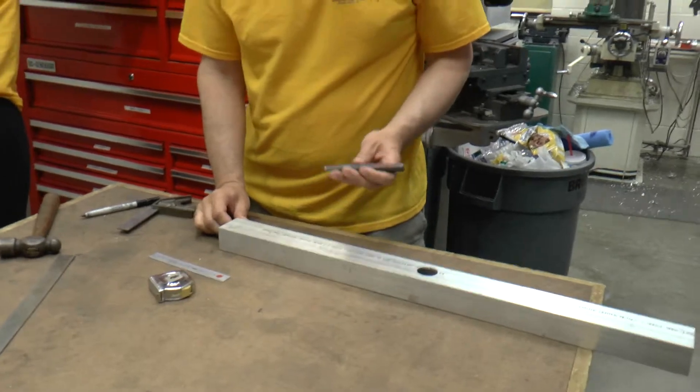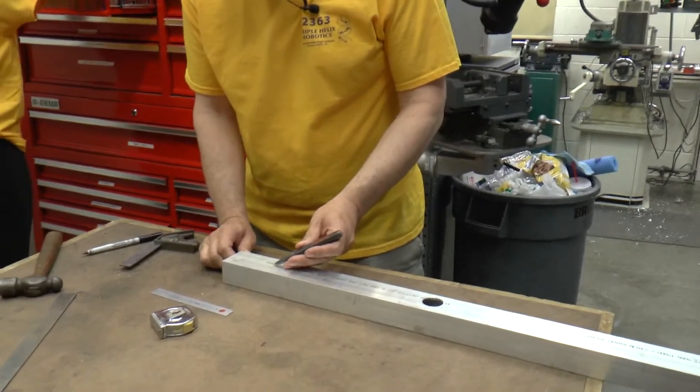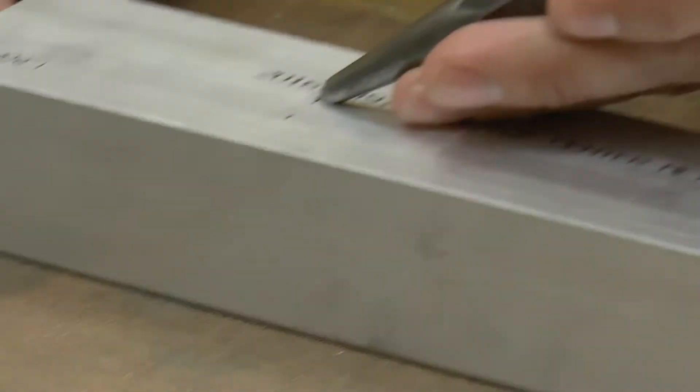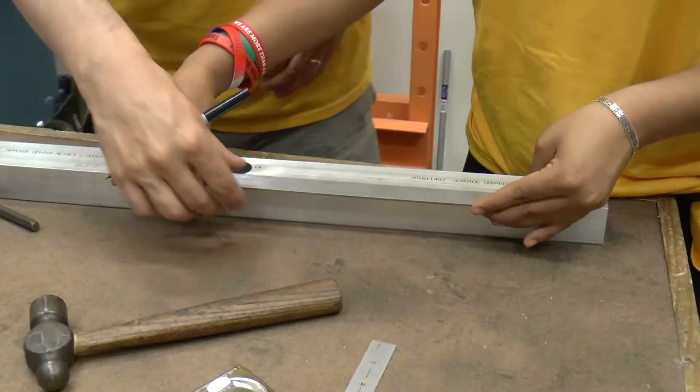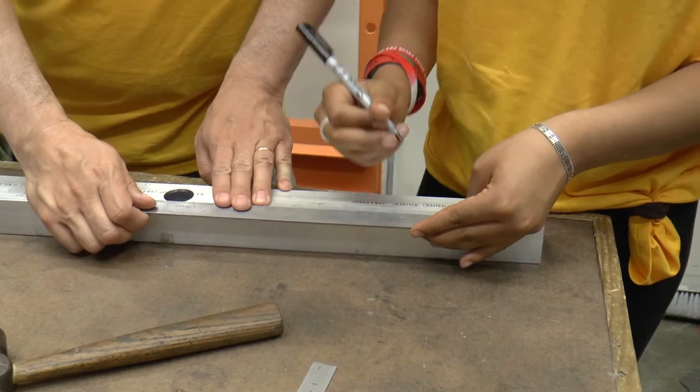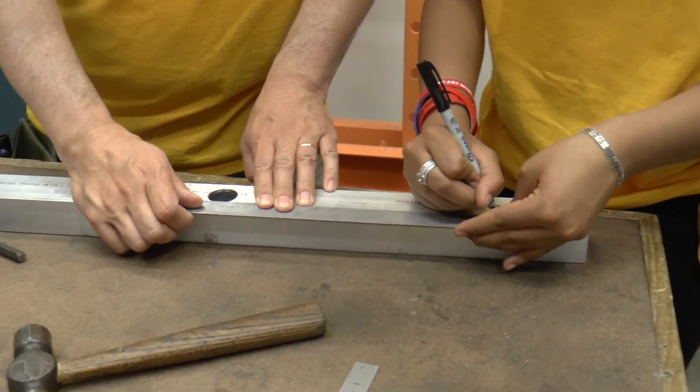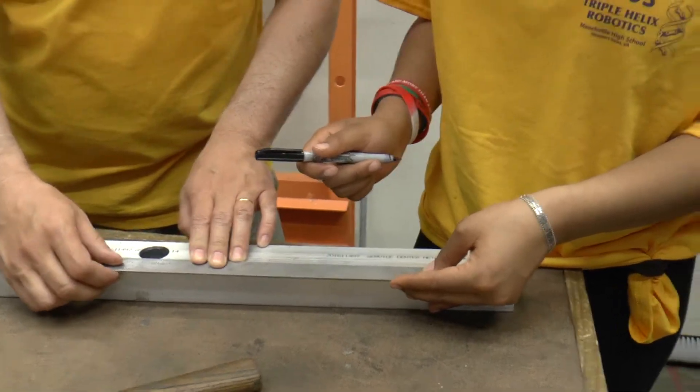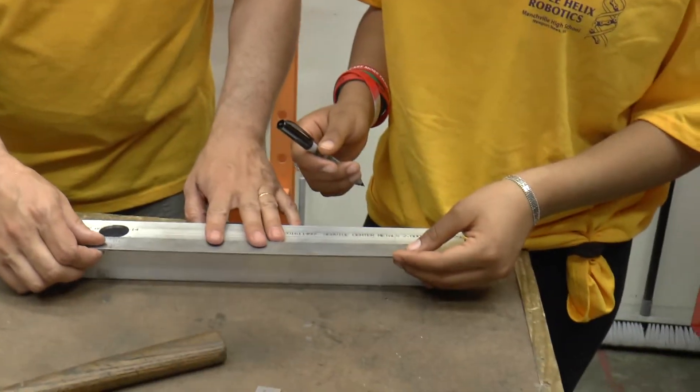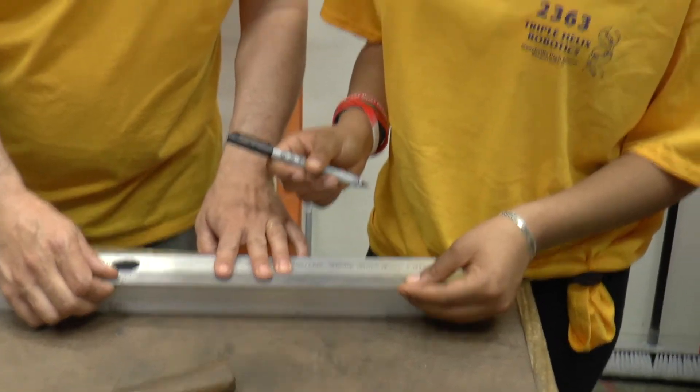So when you do a center punch you take your tip and you set it right on the center of that crosshair, you set it up and you give it a good whack. So 10 and a quarter and a 16th is right there. Tell you what, let's cheat in and go to 11 and a quarter and a 16th and then you can mark it on the one inch mark.